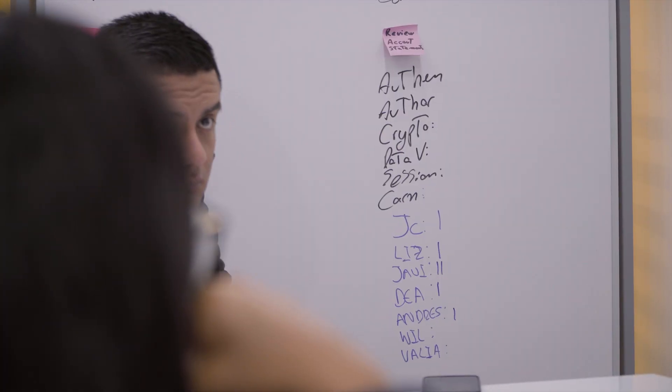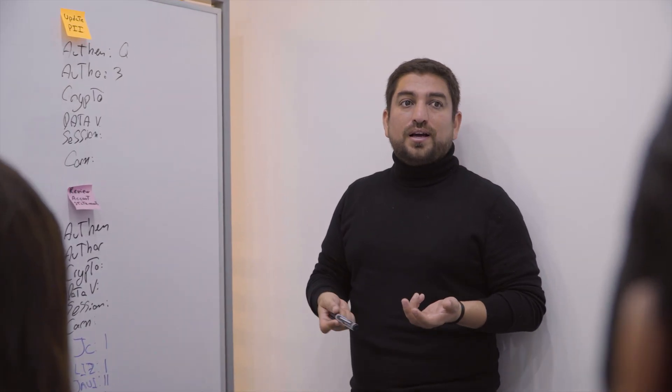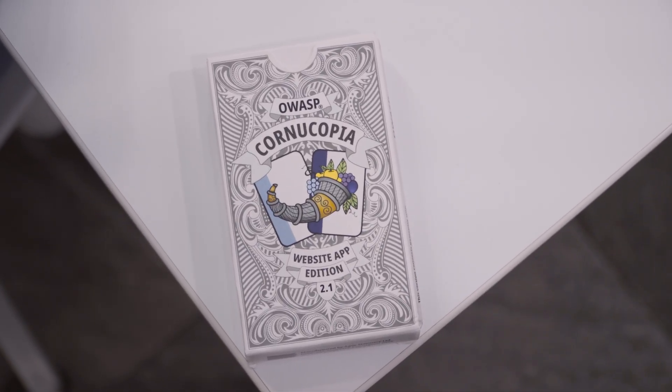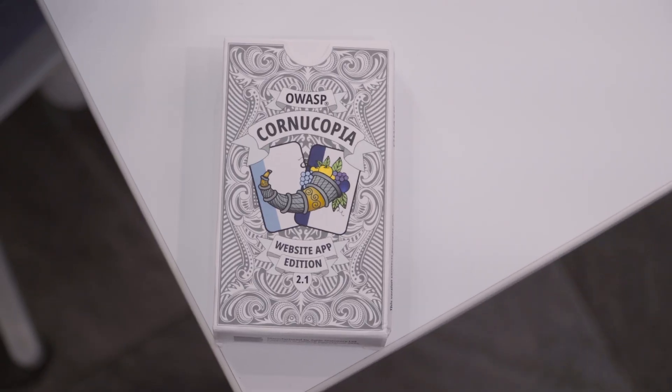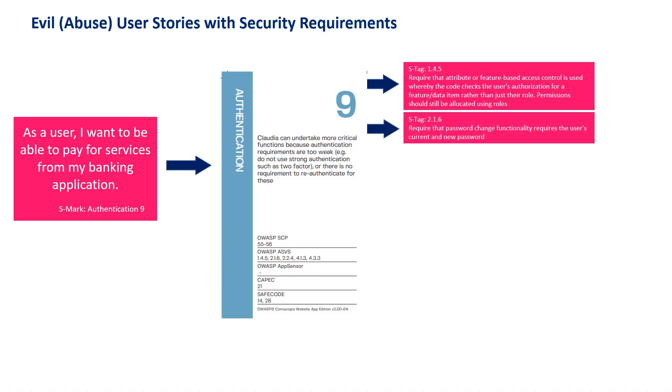Integrating security into agility is often very challenging due to the dynamic nature of the process and the limited time available. This methodology adapts perfectly to the current time frame, making the identification of security requirements more efficient and effective. It's much better to have a good, ready-made threat model than a perfect, unfinished one. At the end of the game, you will have some user stories integrated with Cornucopia cards and with the Application Security Verification Standard as your security requirements.